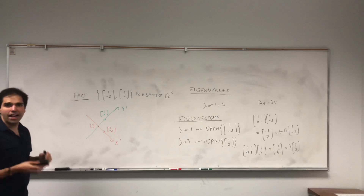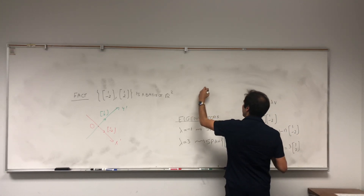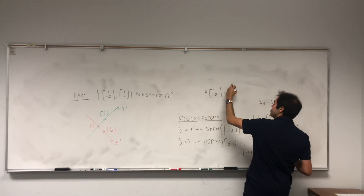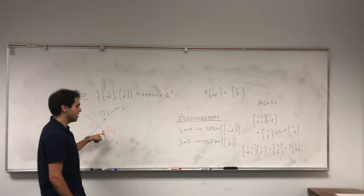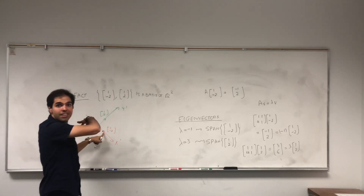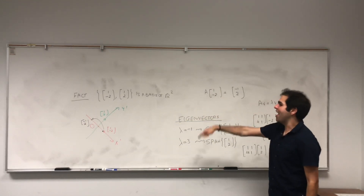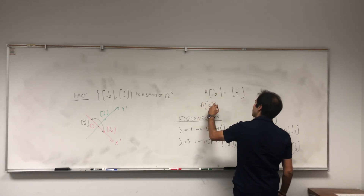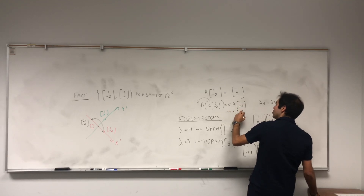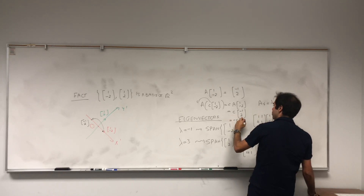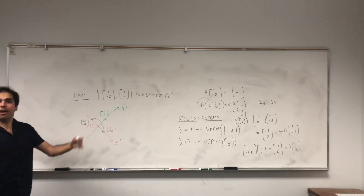Using those axes, we can tell you what A does. What does A do on the x' axis? For example, what does A do to (1, -2)? Well, it gives -1 times (1, -2). In other words, if you take a vector on this axis and apply A to it, it just flips it around the origin. And in fact this is true for any vector on the x' axis. Because if you take any multiple c of (1, -2), the c comes out, and you get c times A times (1, -2), which is c times -1 times (1, -2), which becomes -c times (1, -2). So any vector on the x' axis, A flips it.